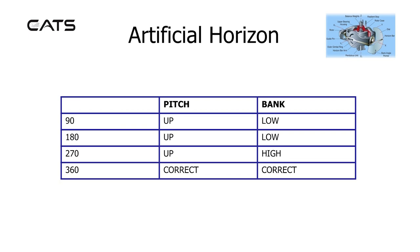With bank, it's low for 90 degrees, 180 degrees low, high at 270 degrees, and correct again at 360 degrees.